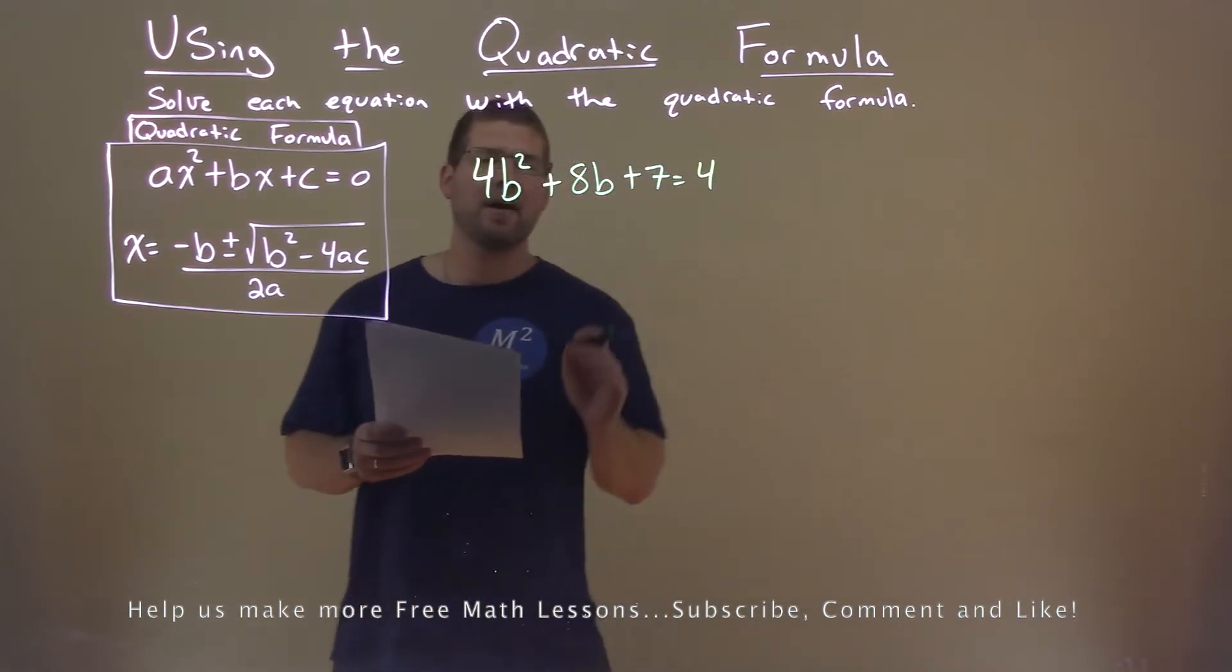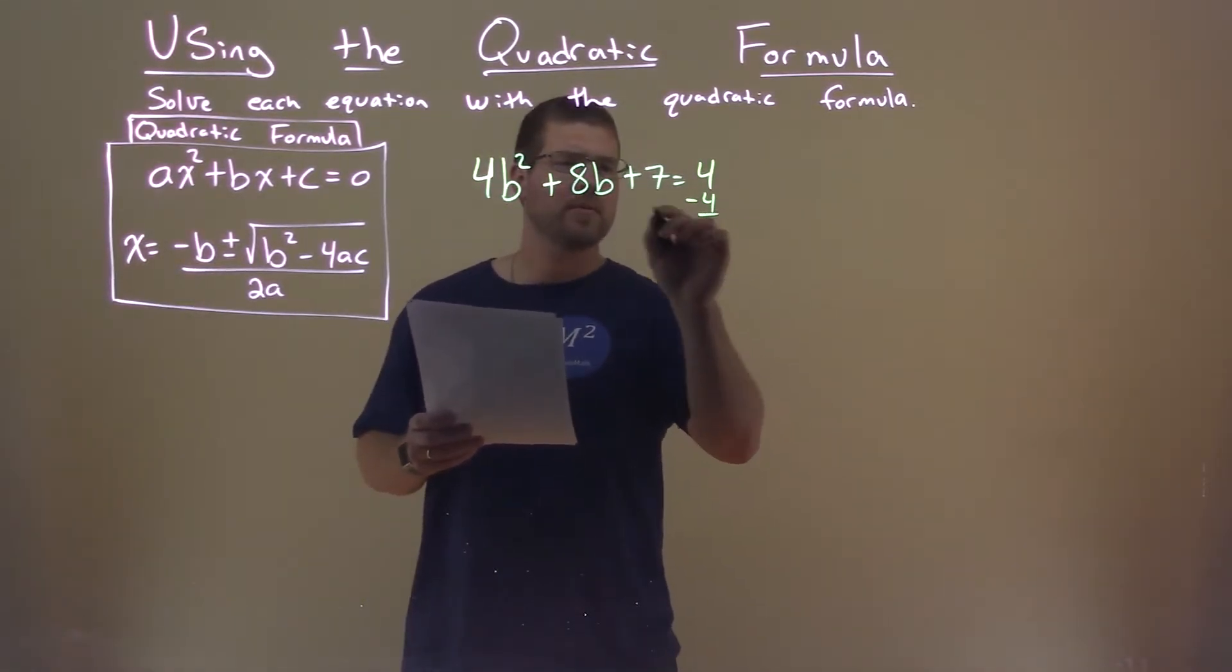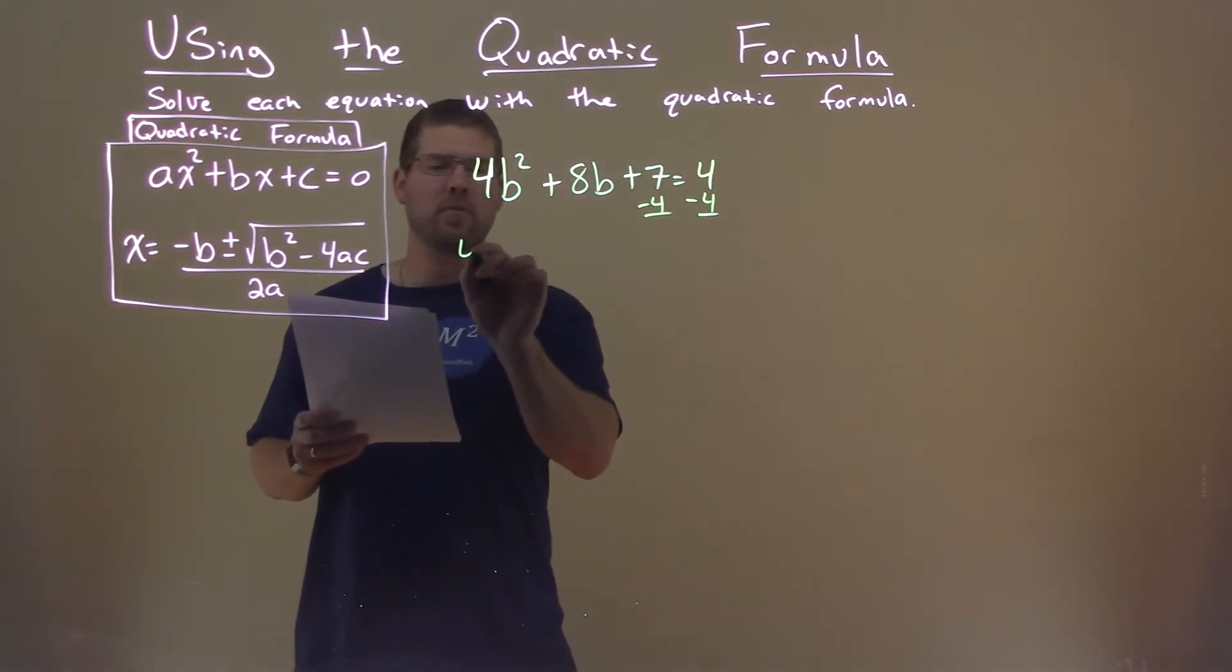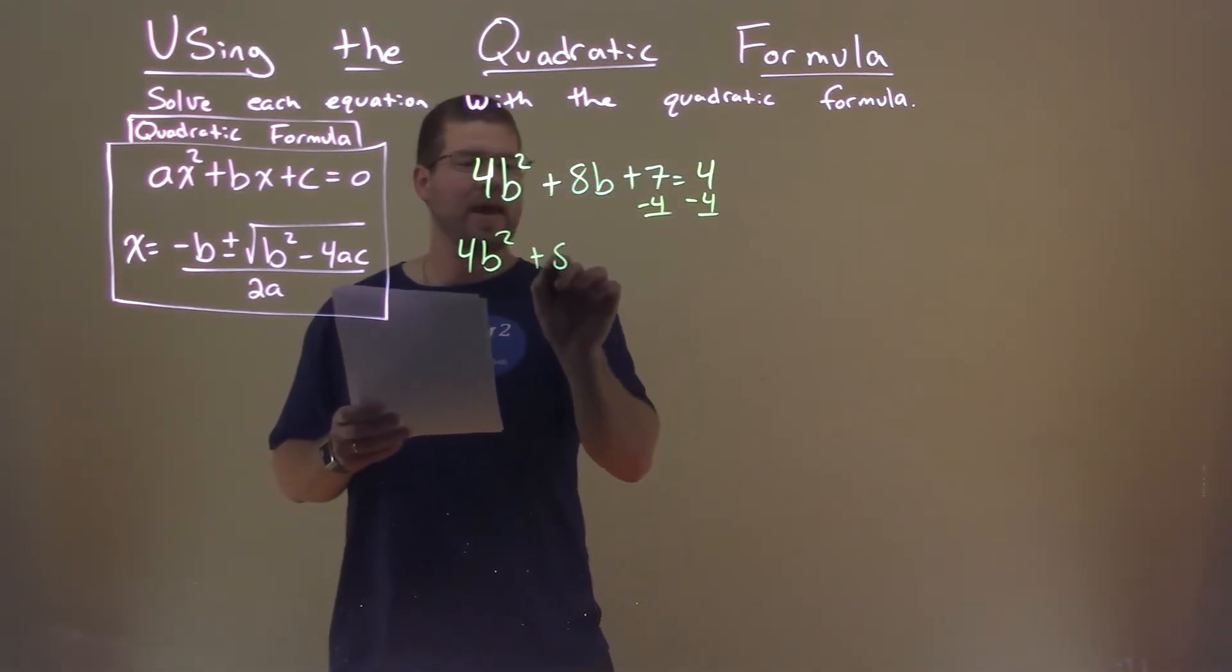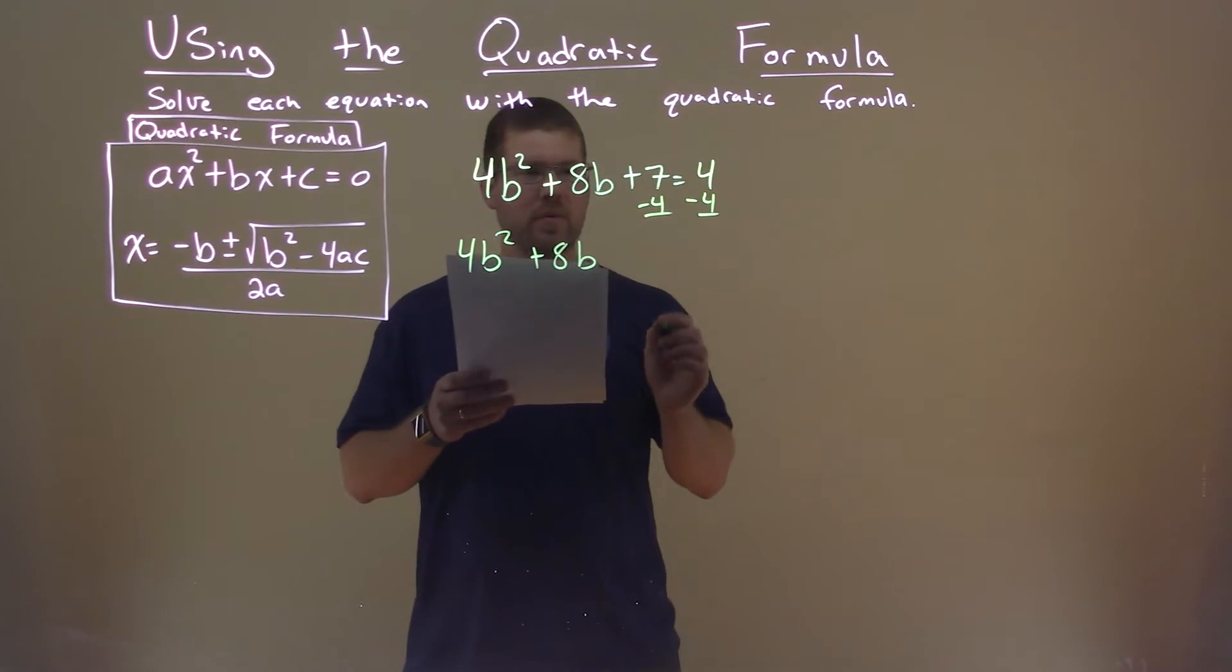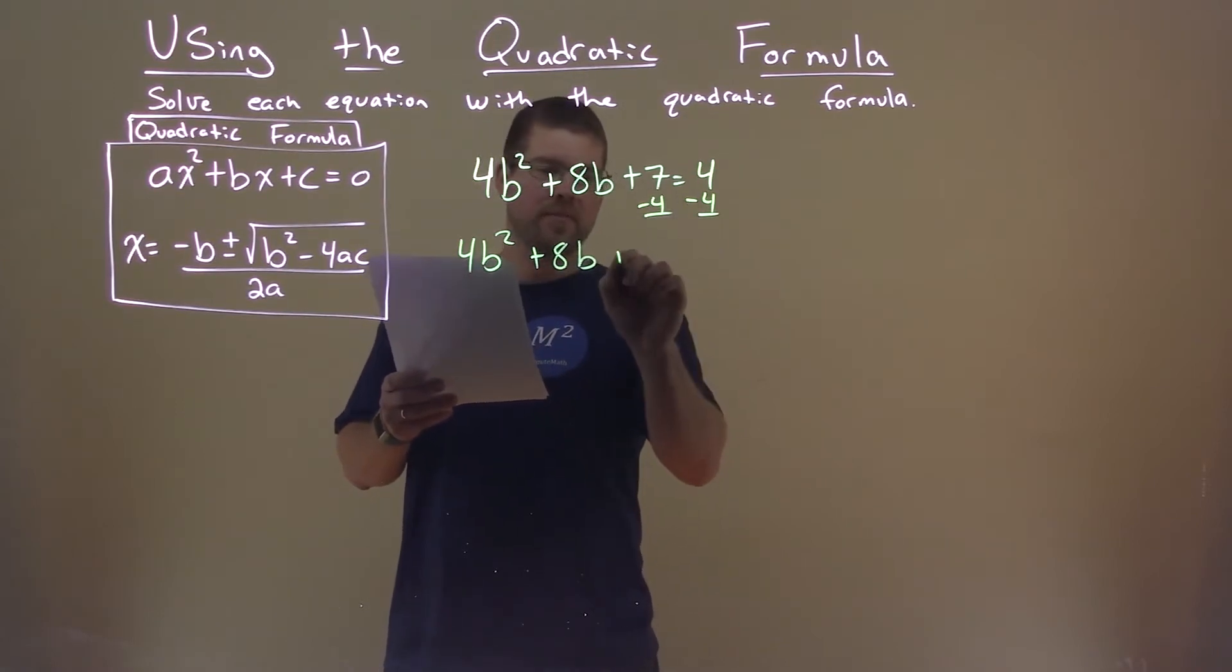I have to have this equation equal to 0. So I'm going to subtract 4 from both sides, and we're left with 4b squared plus 8b, and then positive 7 minus 4 is 3.